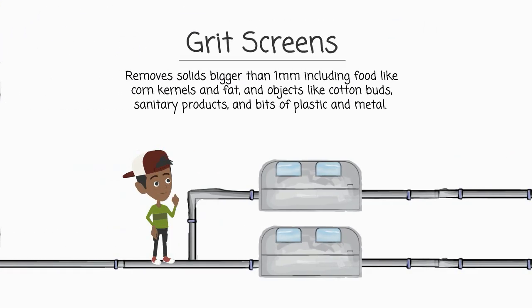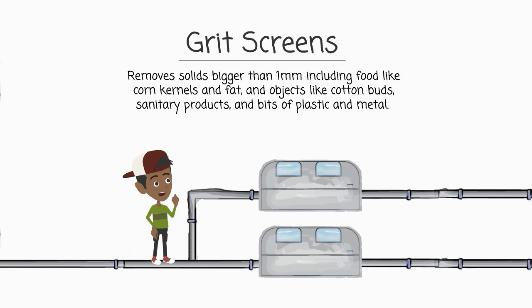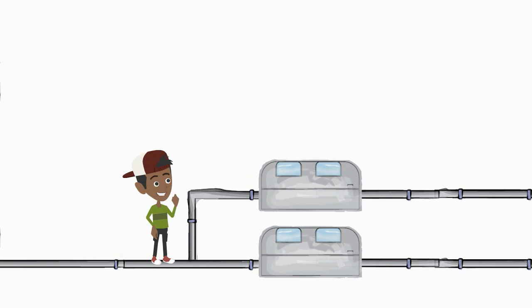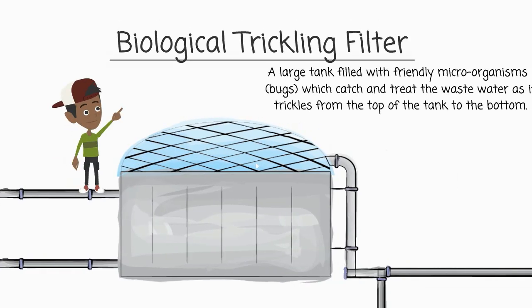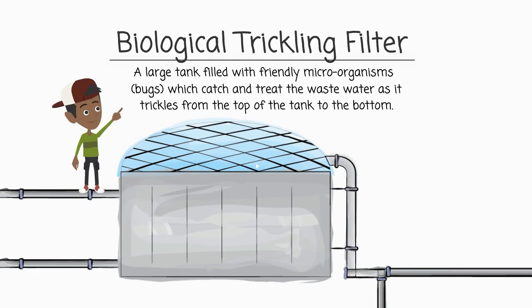First it goes through grit screens that remove solid bits and pieces. Then the water heads to the biological trickling filter or the BTF, where it trickles through a filter that uses friendly microorganisms to treat the bad bacteria.